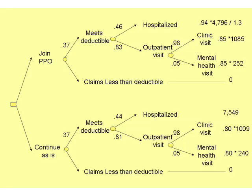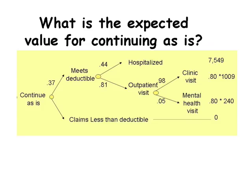Here is a decision tree constructed for a PPO offer to a bank. We'd like to show you how to analyze this decision tree. Let's focus on the option of continue as is, and let's calculate the expected value for continuing as is.